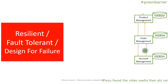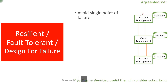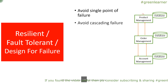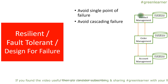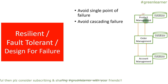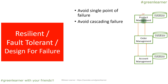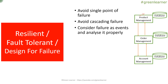Fault tolerance means an error at one individual service should not affect others. Avoid single points of failure. Avoid cascading failures — a failure at one point should not propagate to others. If Account Management calls Order Management, which calls Product Management, an exception at Product Management should not propagate all the way back to Account Management. There should be a default response so each service knows what to do at that point. Consider failures as events and analyze them so you can handle them in future.